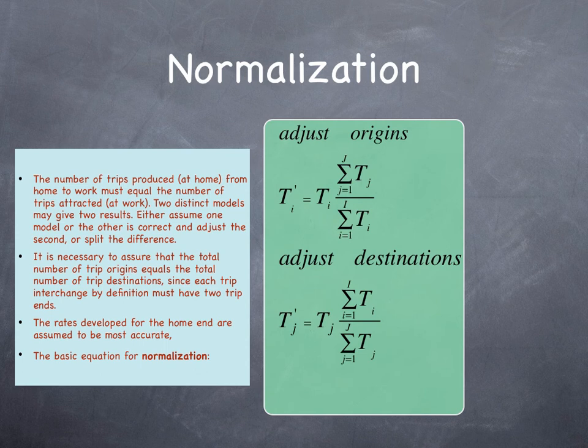For instance, you can either assume that one model or the other is correct and adjust the second, or you can split the difference. It is necessary to assure that the total number of trip origins equals the total number of trip destinations, such that each trip interchange, by definition, must have two trip ends.